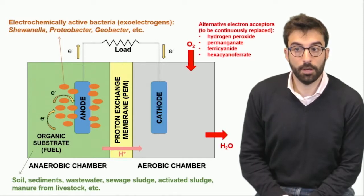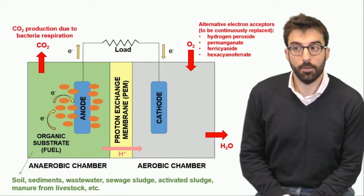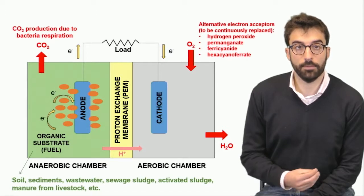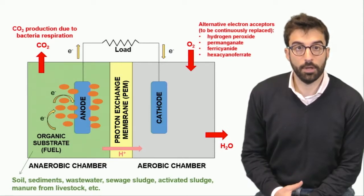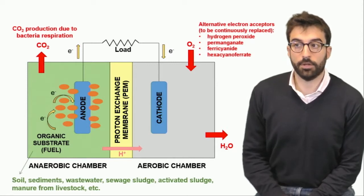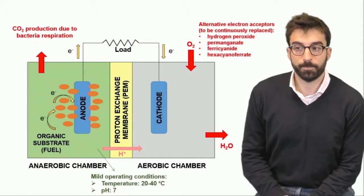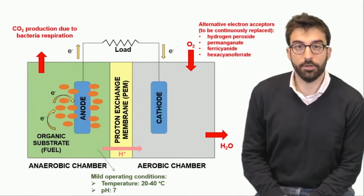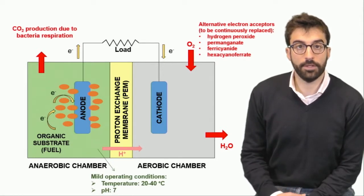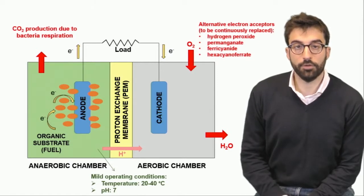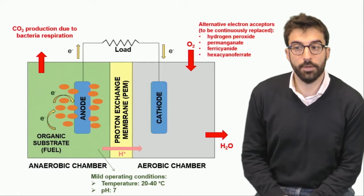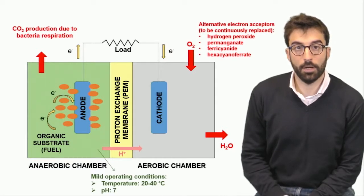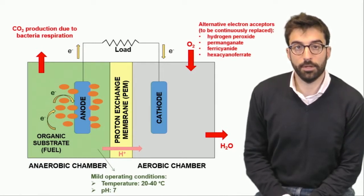What is the product? On the cathode is water, and we also have carbon dioxide, of course, as a product of the degradation of the organic matter and also the product of bacteria respiration. This process usually happens in pretty mild operating conditions, which is a big advantage because it allows very simple thermal treatment. We usually have a temperature around 20-40 Celsius degrees and pH close to 7.